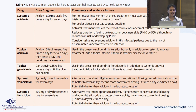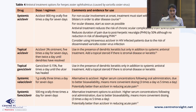Topical ganciclovir 0.15% is used till the ulcer is healed, then reduced. Systemic valacyclovir is 1g orally three times a day for 7 days. Systemic famciclovir 500 mg orally 3 times a day for 7 days — it is potentially better than acyclovir in reducing the acute pain of herpes zoster.